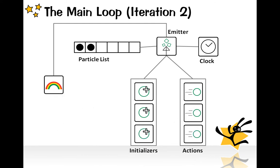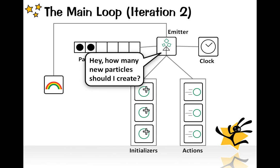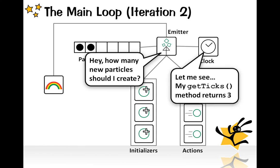Now let's enter the second iteration. The same thing goes on. The emitter asks the clock for how many particles it should create, and in this case, it returns three.